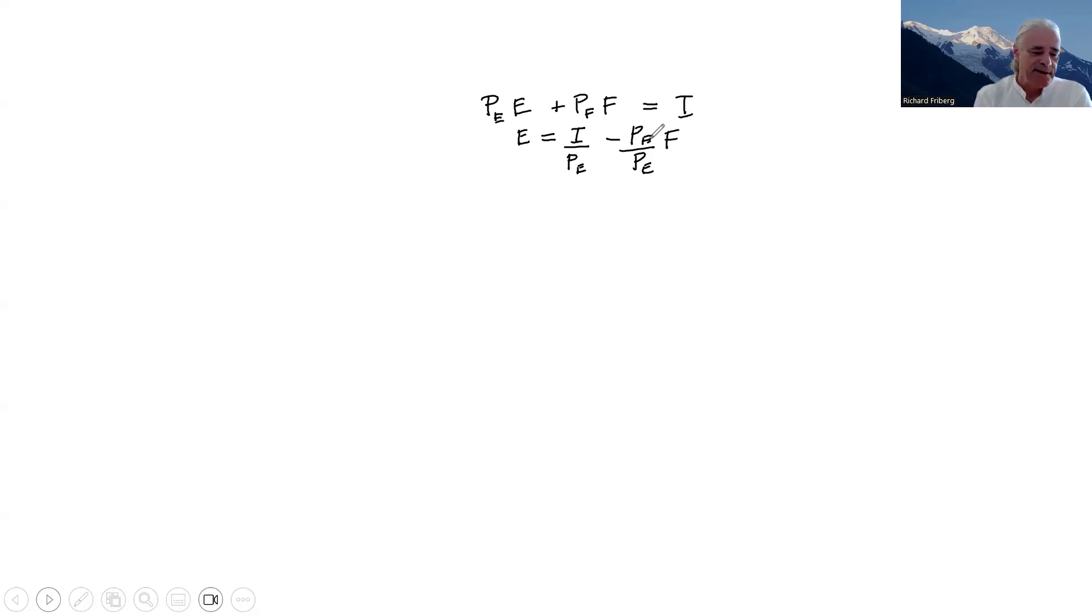Okay, so let's draw this, where we have the number of units of F on the horizontal axis and the number of units of E on the vertical axis. So let's look at different cases here. First assume that I equals 90 and that PE equals 1 and PF equals 1. So the budget constraint will then be equal to E equals 90 divided by 1 minus 1 over 1 times F. So this is how the budget constraint looks for this individual.